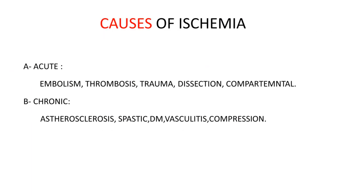Ischemia may be induced by several causes and may present as an acute or chronic condition. Acute ischemia is produced by embolism, thrombosis, trauma, dissection, etc. Chronic ischemia is produced by atherosclerosis, diabetes mellitus, vasculitis, etc.